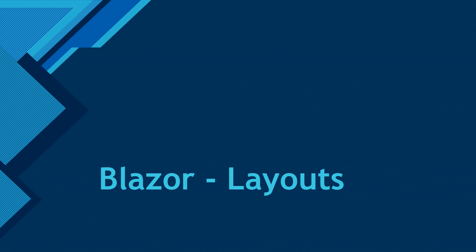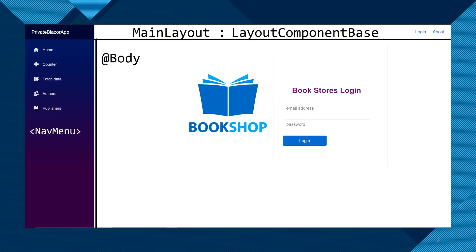Today I'm going to talk about layouts in a Blazor app. Layouts are basically a component which inherits LayoutComponentBase and has @Body to render other components — that's what makes them layouts. When you create a Blazor application using Visual Studio, it gives you a template which has MainLayout as the only layout.